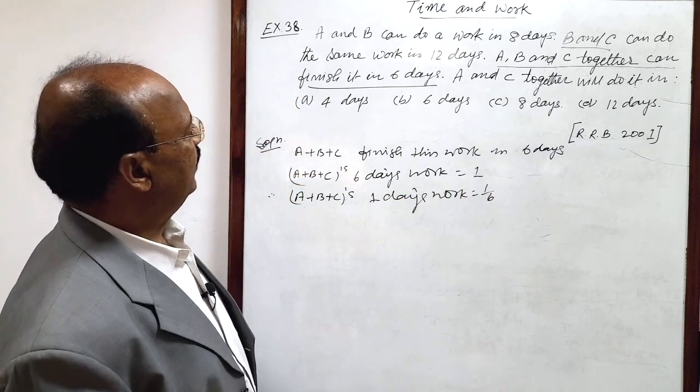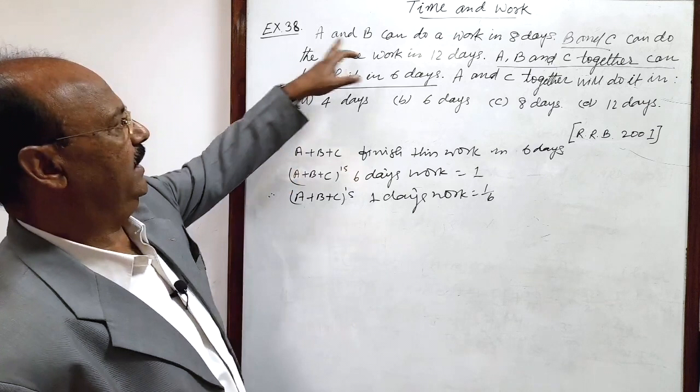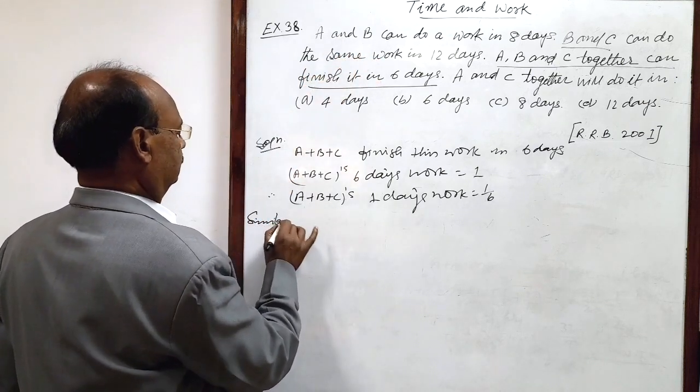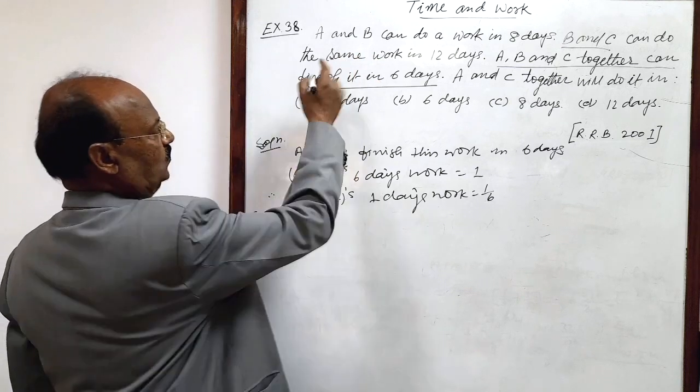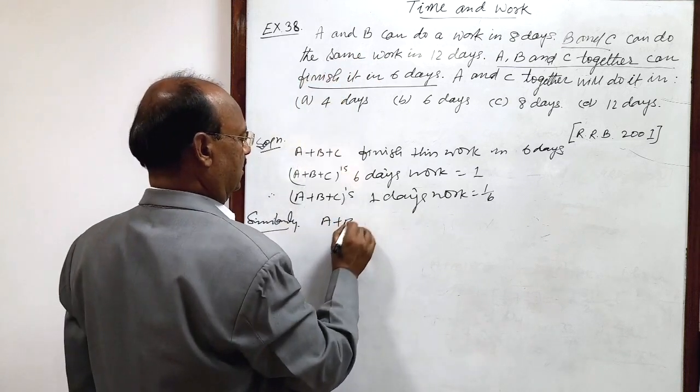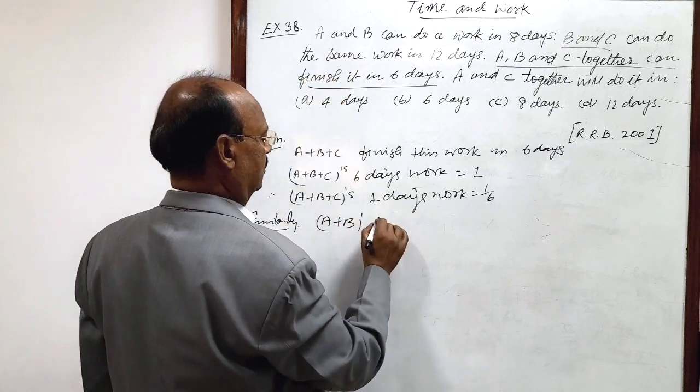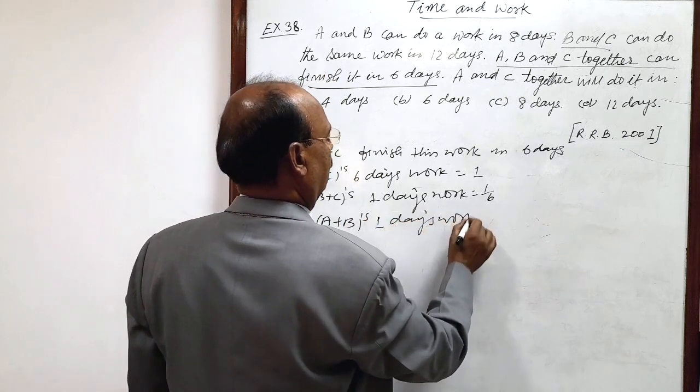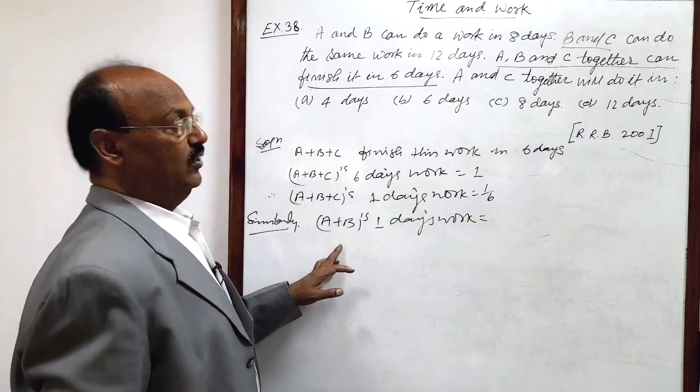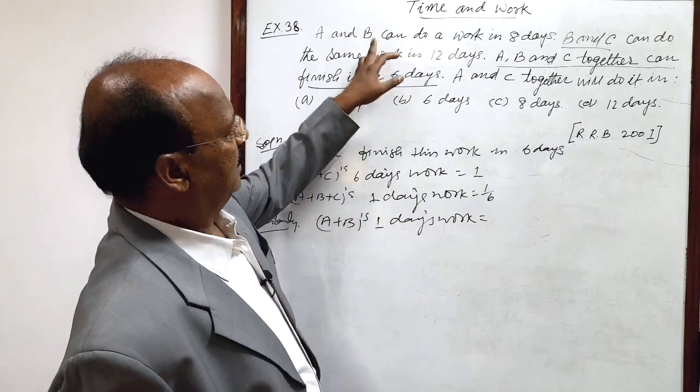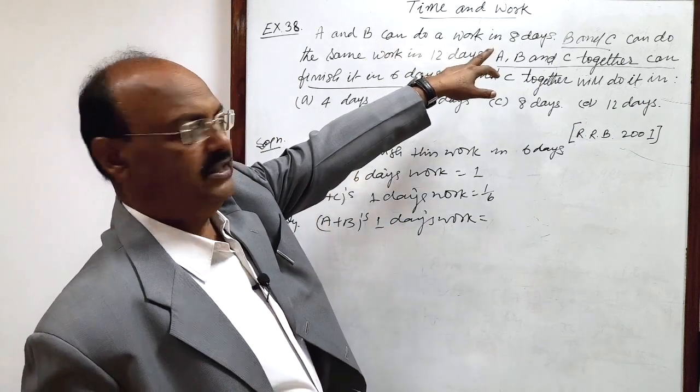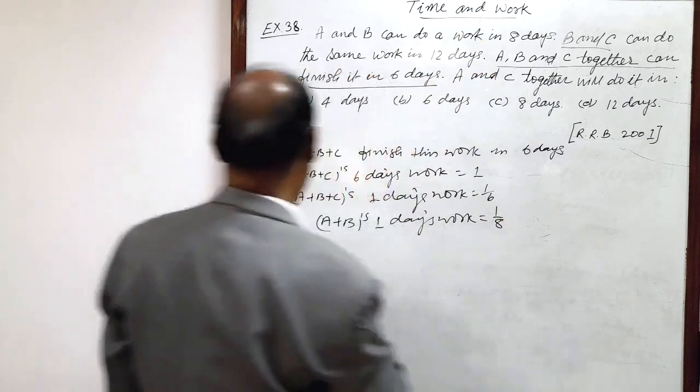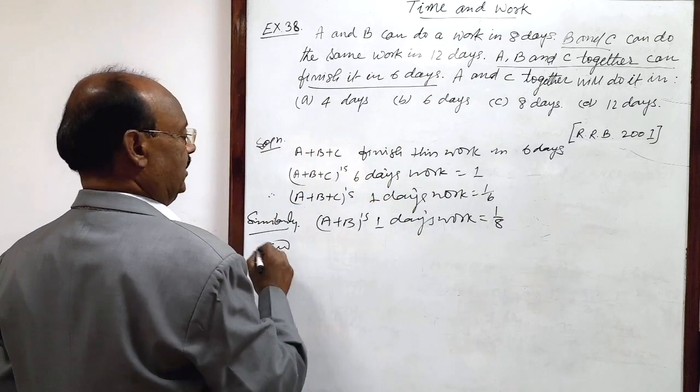Similarly, we can find out 1 day's work of A and B. A plus B, 1 day's work - A and B working together can finish the work in 8 days. So in 1 day, 1 by 8, reciprocal of number of days.